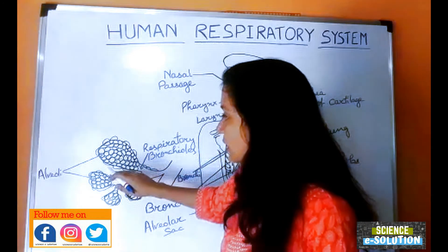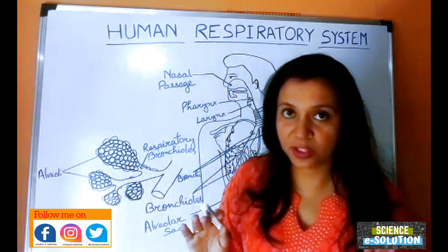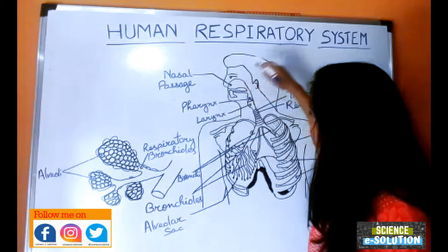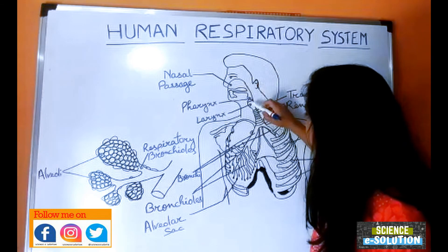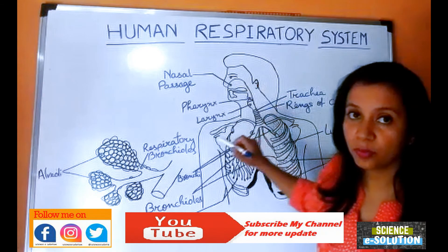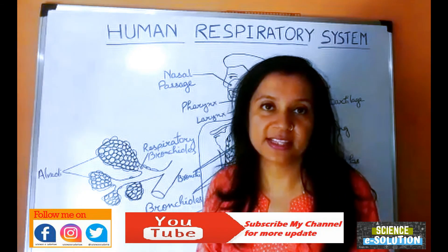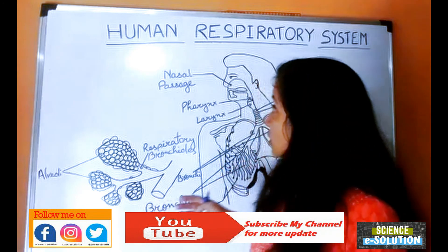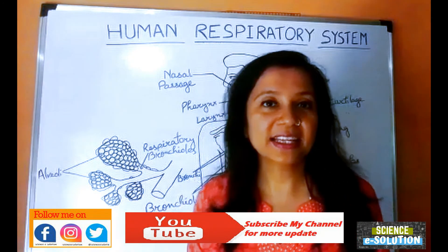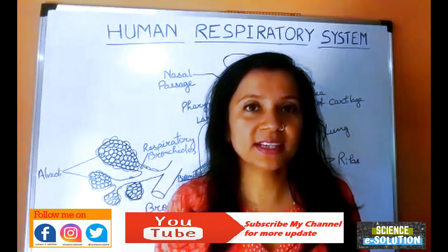To summarize: air enters the nose, then the nasal passage, then the pharynx, then the larynx, then the trachea, then the bronchi, then the bronchioles, and finally into the alveoli where the exchange of gases takes place. That's all for today about the human respiratory system. If you liked the video, please click the like button, and like, share, and subscribe.